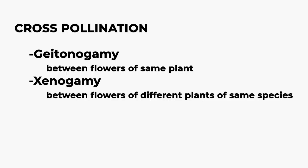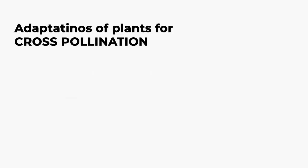So geitonogamy and xenogamy are the two types of cross-pollination. If pollination occurs between two flowers of the same plant, it is called geitonogamy. If pollination occurs between two flowers of different plants of the same species, it is called xenogamy. Now we are going to learn about the adaptations seen in plants for cross-pollination.